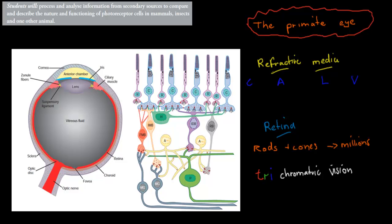In the last couple of videos we covered the eye in more detail, specifically the human eye. In this video we're going to talk about different types of eyes, which includes the primate eye or a mammalian eye, an insect eye, and an eye of a worm as well.